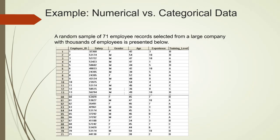In this example, salary, age, and experience are all numerical variables, whereas gender and training levels are categorical variables.